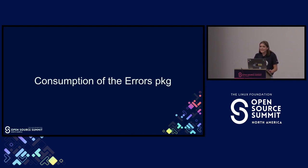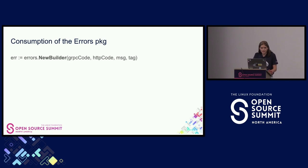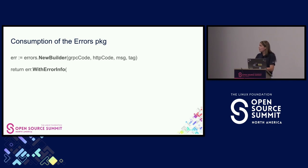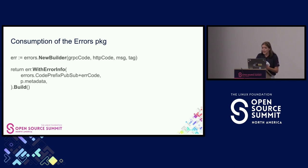Now let's look at the consumption of the errors package. We start with errors.NewBuilder, passing in our gRPC and HTTP error codes, the message, and tag. Then we enrich the error with that required error detail type — we have helper methods for these — passing in the relevant attributes, and then we simply call Build. This is our simple builder pattern.